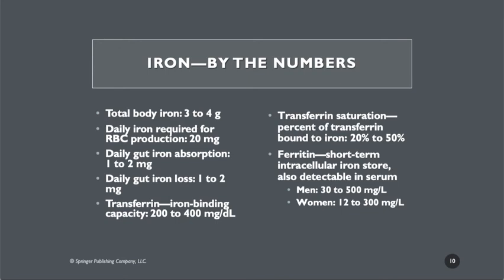Your total body iron content is about 3 or 4 grams. Your daily ability to absorb iron is only 1 to 2 milligrams. So if your total iron content of your body is 3 to 4 grams and there's only 1 to 2 milligrams absorbed from your diet, where's all the rest of it coming from? It comes from those old dead red blood cells, and we have to have a good mechanism for processing that iron out of those dead red blood cells.